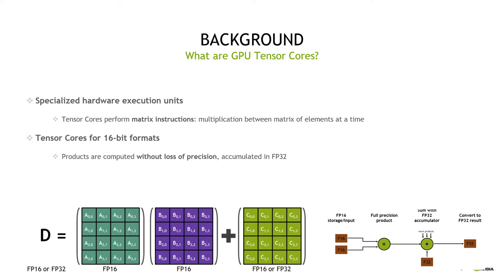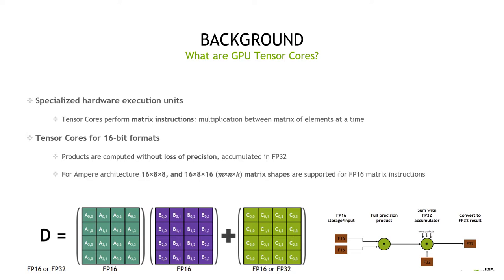Here is a diagram demonstrating the mixed precision matrix multiplication on Volta Tensor Cores. On every clock cycle, it multiplies two 4x4 half precision matrices, resulting in an FP32 product, which is then added to the accumulator. For Ampere architecture, 16x8x8 and 16x8x16 matrix shapes are supported for half precision matrix instructions. It can accelerate math and memory-limited operations.